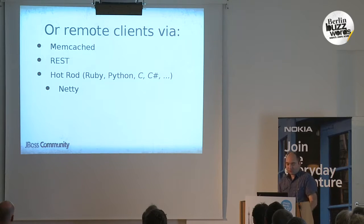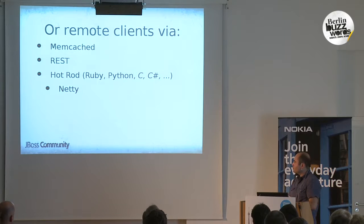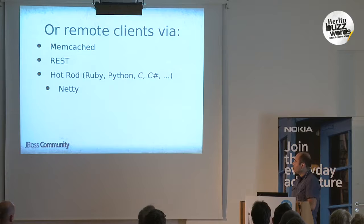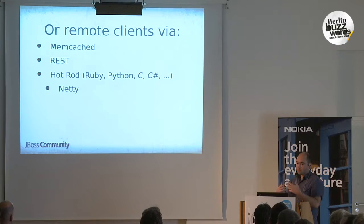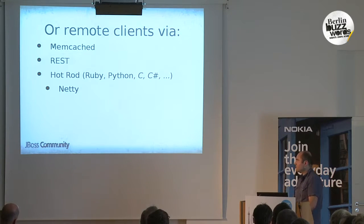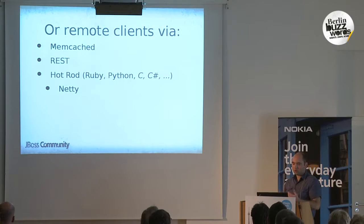It's also possible to connect to InfiniSpan nodes from other languages remotely, not living in the same JVM. There are three alternatives: memcached, so you can use any memcache client or application and replace it with an InfiniSpan cache; a REST WAR, which exposes the InfiniSpan content via a REST API; and Hot Rod, a custom proprietary protocol that takes advantage of knowledge of the InfiniSpan grid topology to get higher performance than memcached or REST.